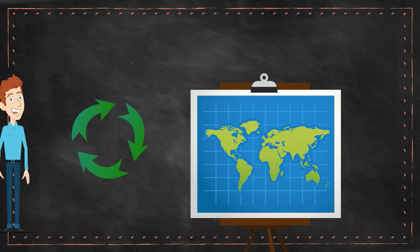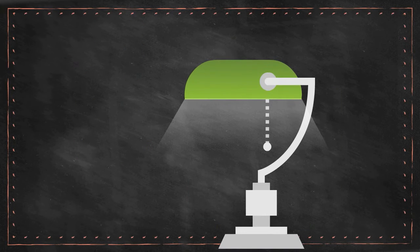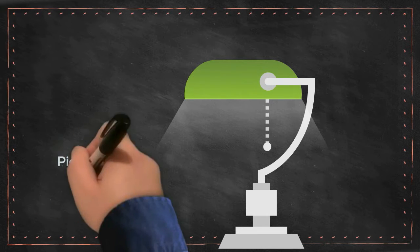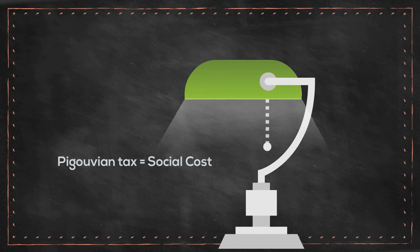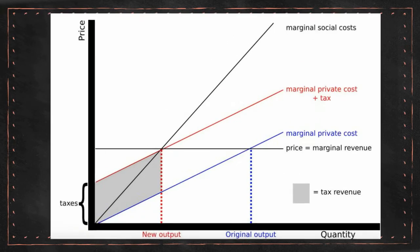Negative externalities are costs that are not internalized in the market price of a product that a company sells. For instance, environmental pollution is considered to be a negative externality as it affects third parties. In order to find a solution to those negative externalities, the Pigouvian tax is set equal to the social cost of the negative externality of the inefficient market outcomes.